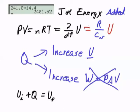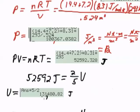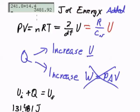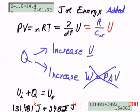And we're going to add this heat and we're going to find the final internal energy. So we're going to start with this 131,481. And add this 3481, 3482 joules.